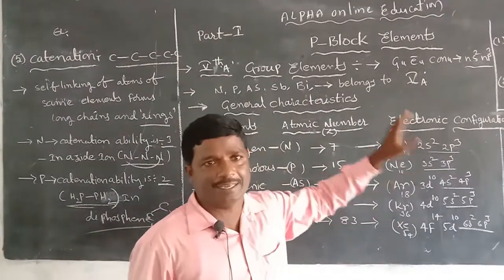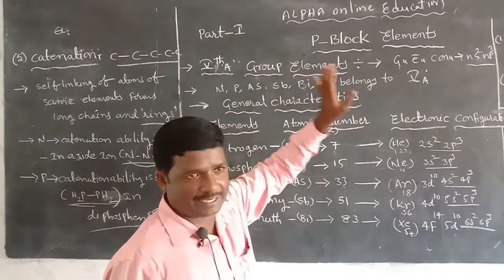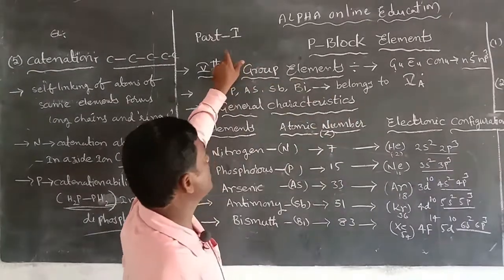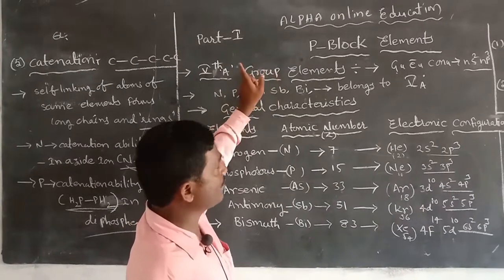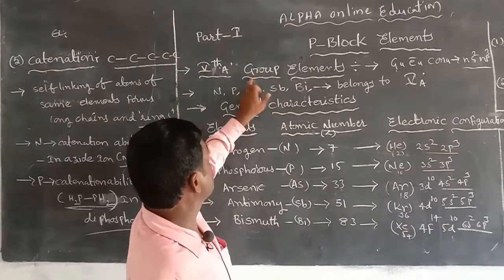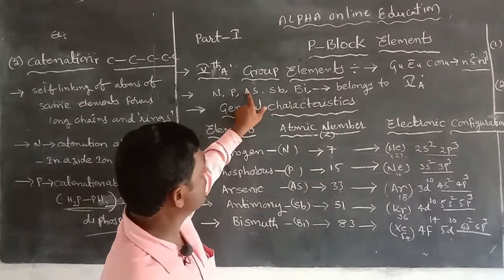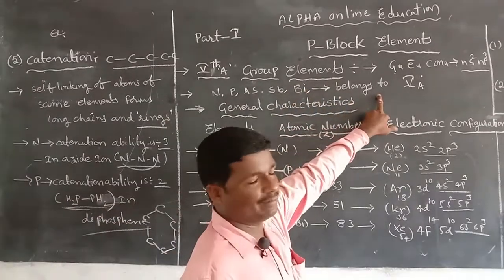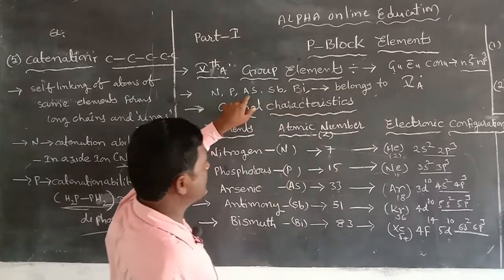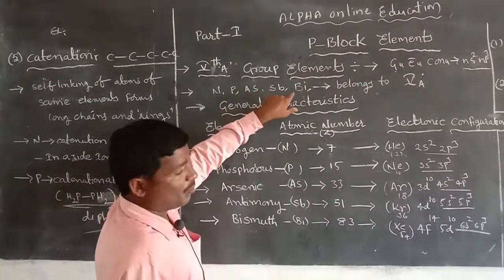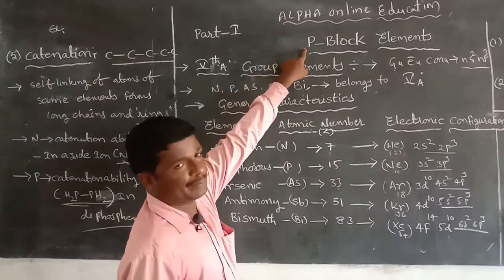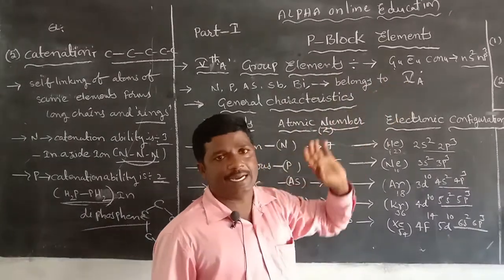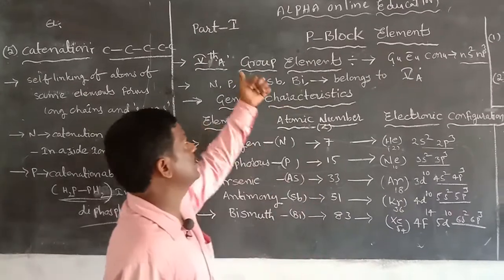The p-block elements include Group 3A to Group 7A and zero group elements. We have already studied Group 3A and Group 4A elements in first year. Now we start Group 5A elements, also known as the nitrogen family or pnictogens. These are the 15th group or Group 5A elements by IUPAC notation.